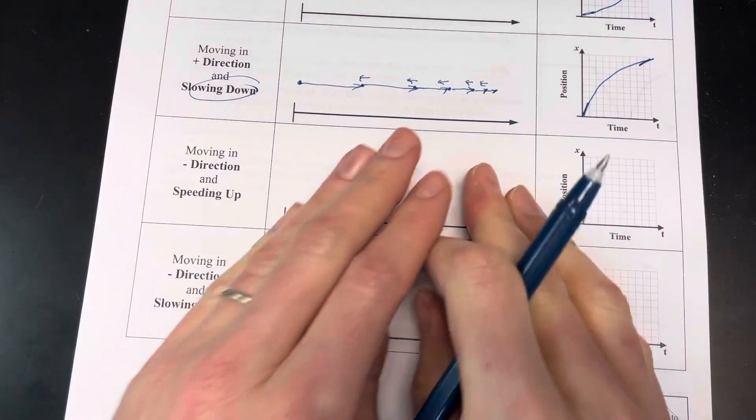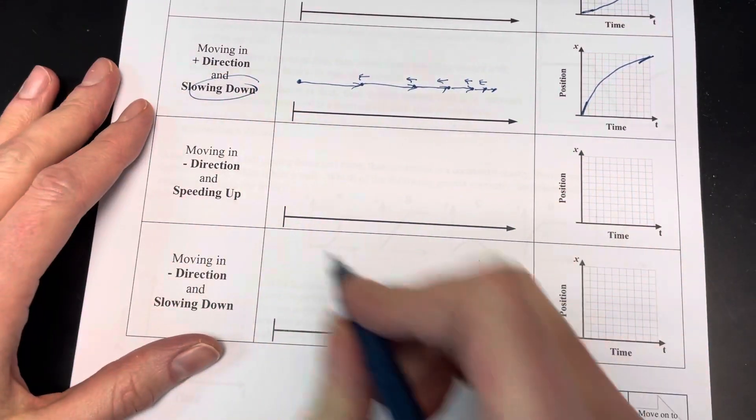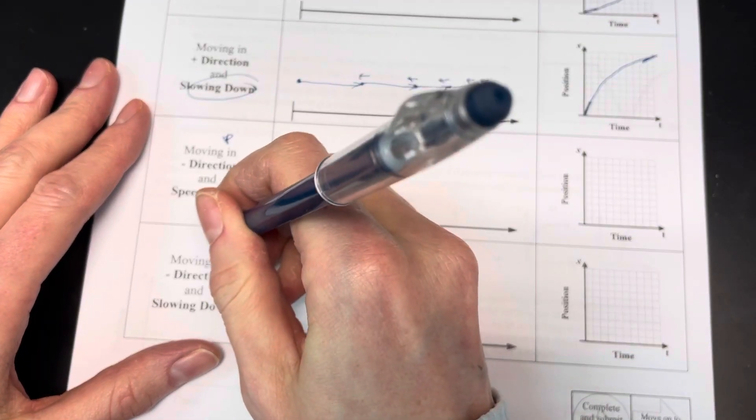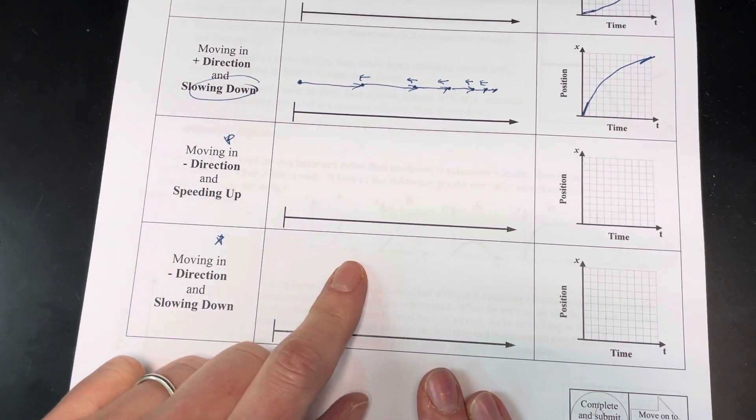Now let's take a look at going in the negative direction. This one's going to be the tricky one. I'll put a little star here. This one's going to be the one that trips you up. You've got to pay extra special attention.